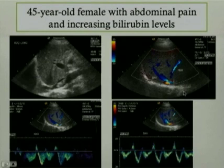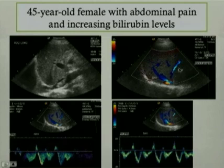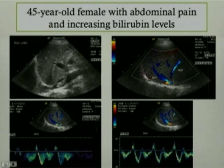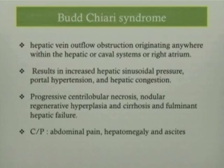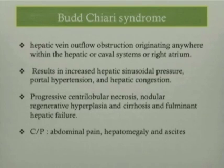The last case is a 45-year-old female who presented with abdominal pain and increasing bilirubin levels. The first image demonstrates the IVC with an echogenic material within it representing thrombus. The other pictures demonstrate the right hepatic and middle hepatic veins, although the left hepatic vein was not seen. Also seen is an area of aliasing or mosaic artifact corresponding to the presence of thrombus within the IVC. The diagnosis was Budd-Chiari syndrome, which is hepatic vein outflow obstruction originating anywhere within the hepatic or caval systems or even the right atrium. It results in increased hepatic sinusoidal pressure, portal hypertension, hepatic congestion, progressive central lobular necrosis, nodular regenerative hyperplasia, and cirrhosis, and can lead to fulminant hepatic failure. Patients present with abdominal pain, hepatomegaly, and ascites, and need emergent TIPS to relieve the pressure.